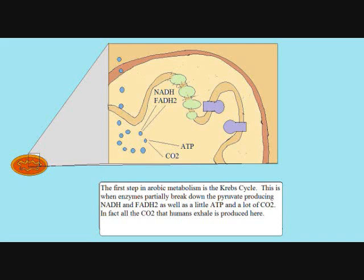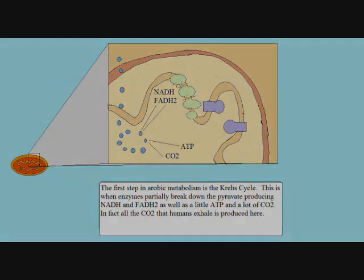Once pyruvate has moved from the cell cytoplasm to the inner matrix, the Krebs cycle begins. Pyruvate is partially broken down by enzymes, and NADH and FADH2 are produced. These are highly reduced molecules, which means they are very willing to give up their electrons. The Krebs cycle also produces a little ATP and carbon dioxide.